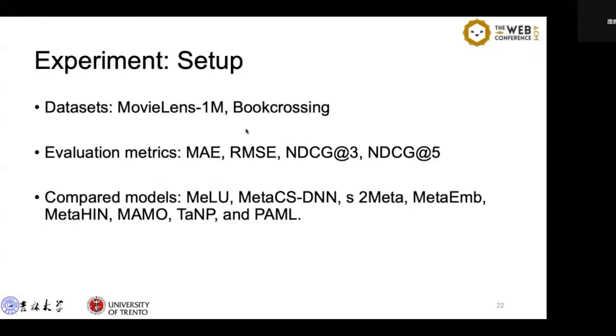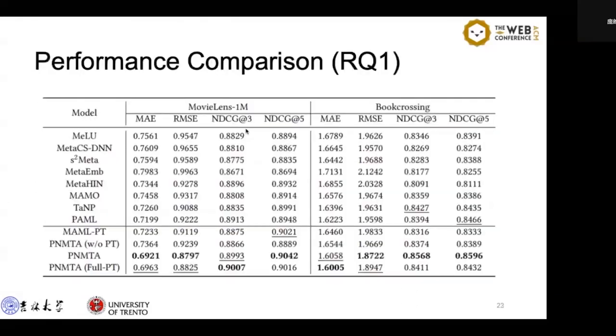For each metric, we calculate the average results for all users from the query set in the test set. And we compare our method with the following meta-learning-based state-of-the-art methods. In the performance comparison, our method outperforms other state-of-the-art methods with significant improvements on both datasets in terms of four metrics.